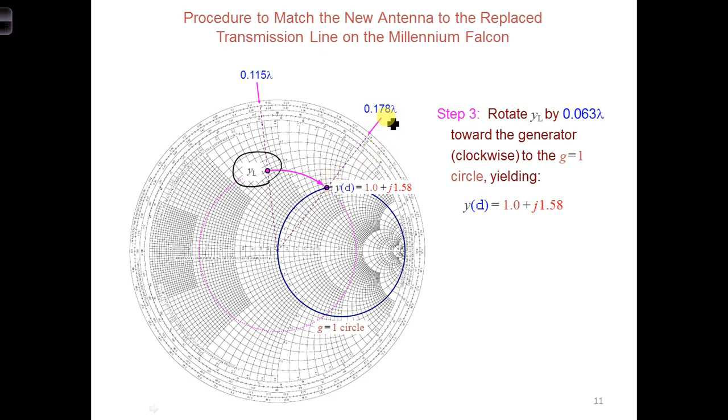And this is at a distance of 0.178 lambda minus our starting position, which is 0.115 lambda, and that is equal to a distance of 0.063 lambda.